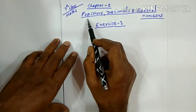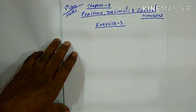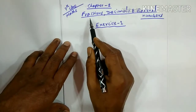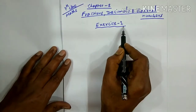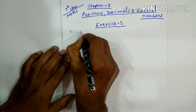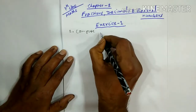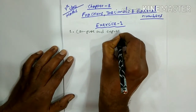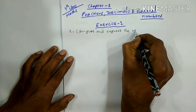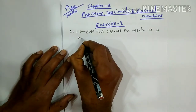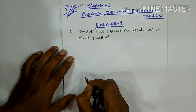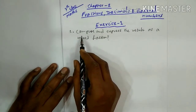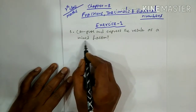7th class math, chapter 2: fractions, decimals and rational numbers. In the previous video we discussed what a fraction is and the introduction. Now we are solving problems from exercise one. The first question says: compute and express the result as a mixed fraction.